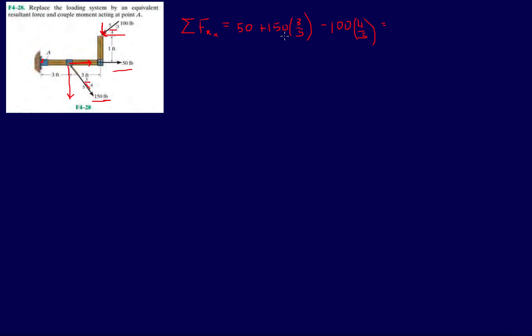So this gives us 50 plus 90 minus 80, which equals 60 pounds. So that's the resultant in the X direction.